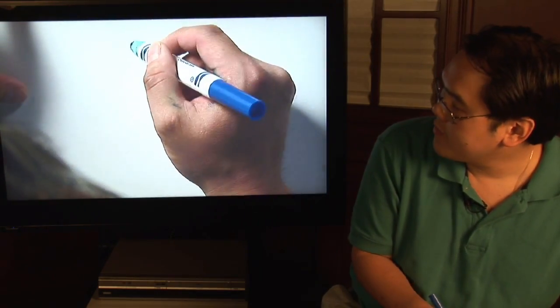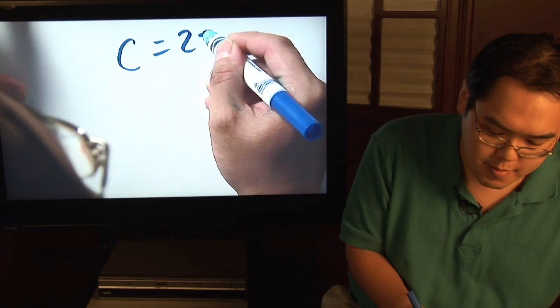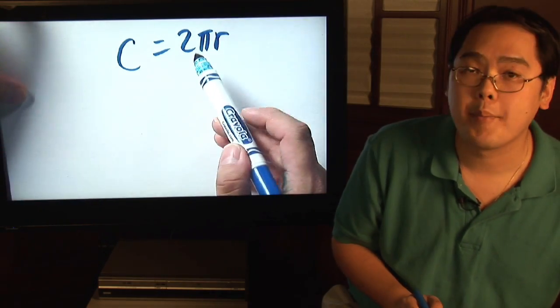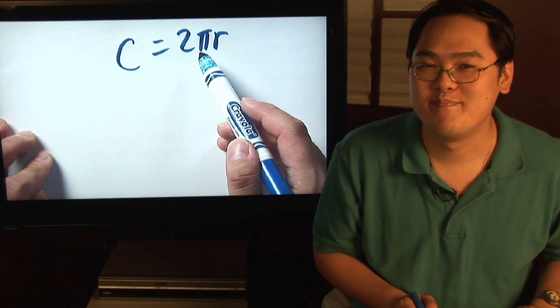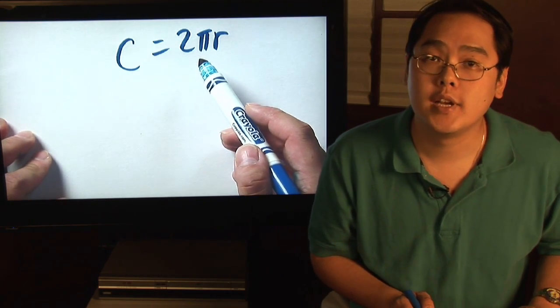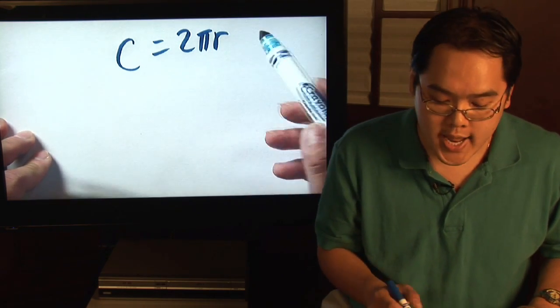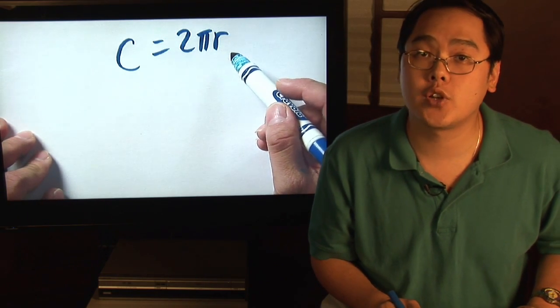Here's the formula you need to find circumference. It's C equals 2 pi r. 2 is 2, pi is that number approximately 3.14, and r is the radius of a circle.